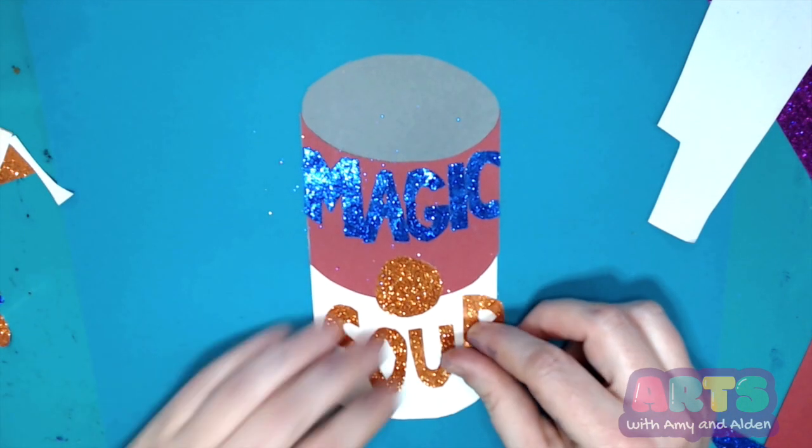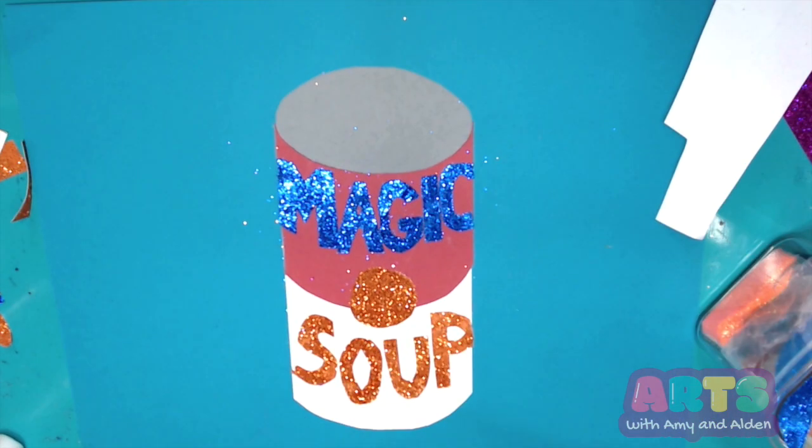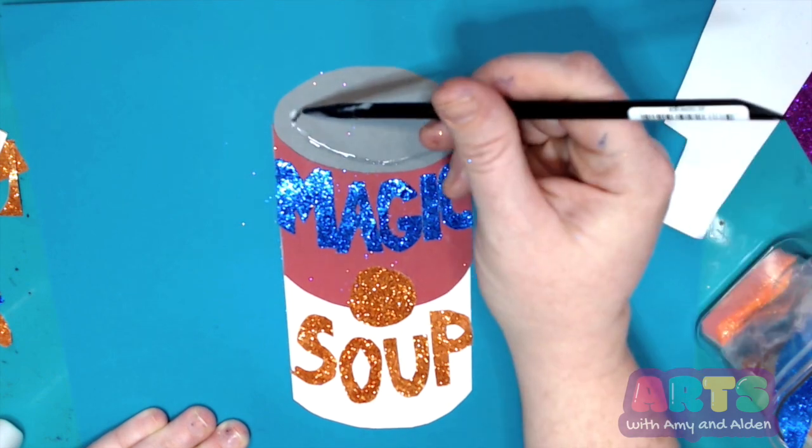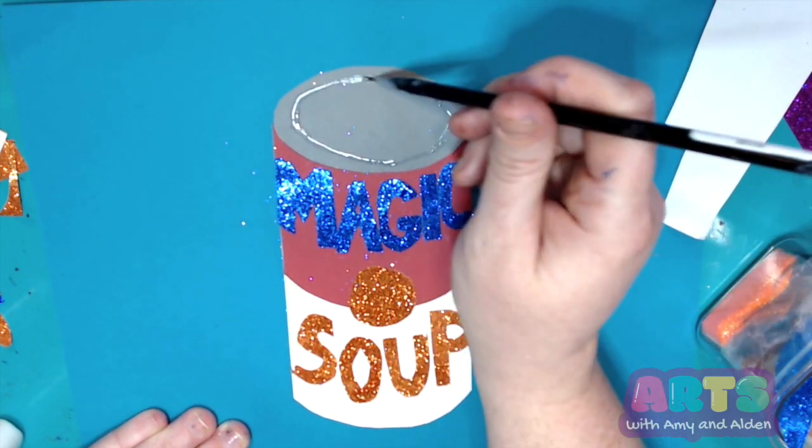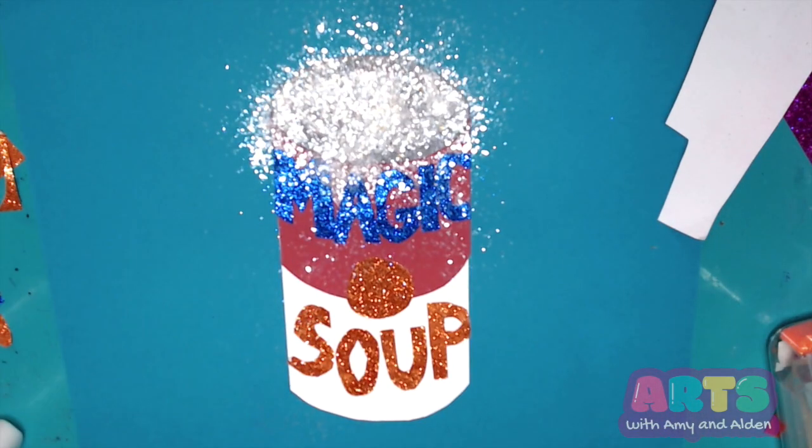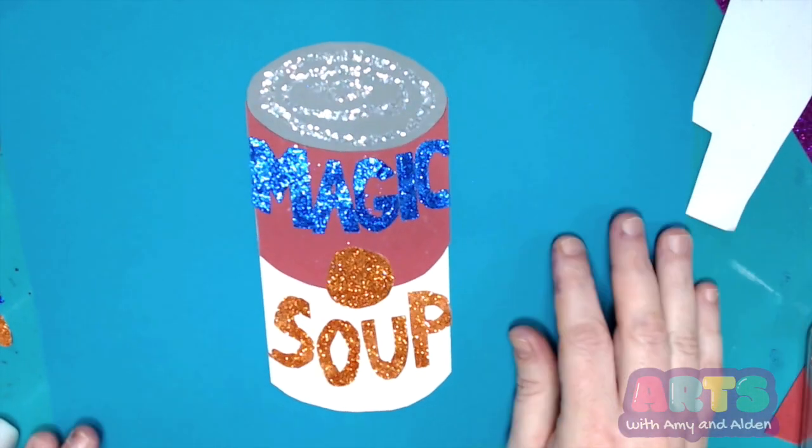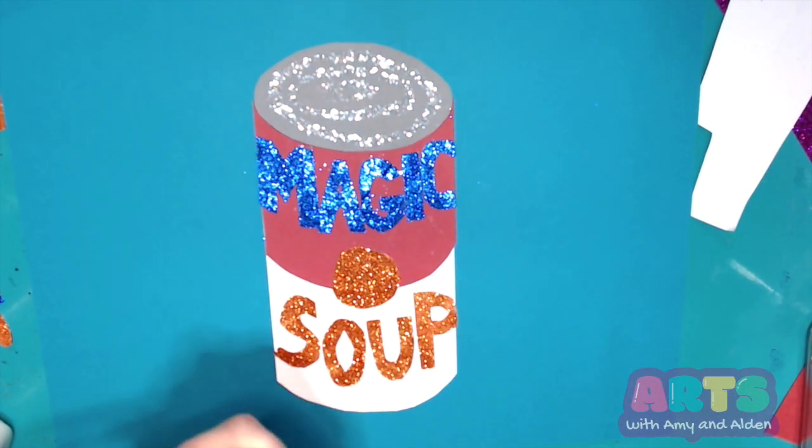in concentric circles - that means one circle inside of the other - and then I just dumped a bunch of glitter on it, shook it off, so it makes those nice rings at the top of the can. Thank you so much